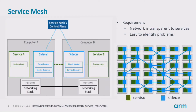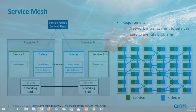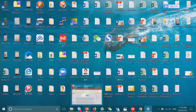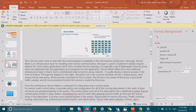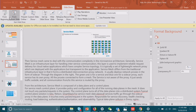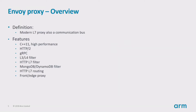Envoy has an official definition: it is a modern L7 proxy and communication bus designed for large-scale service-oriented architectures. It has several outstanding features. It is programmed in C++, which provides high performance. It supports both HTTP/2 and HTTP/1 protocols. It can be used as a two-way transparent network proxy, which can bridge all combinations of HTTP/1 and HTTP/2 clients and servers.